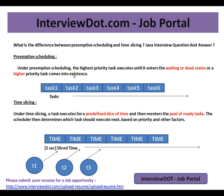For example, you have multiple tasks in your application. The first task will keep executing until it enters the waiting state or dead state. Once it completes or enters the waiting state, task two will be picked up and given an opportunity to execute. So in preemptive scheduling, tasks are given priority.